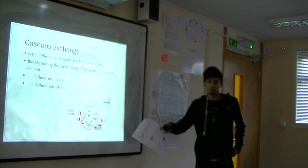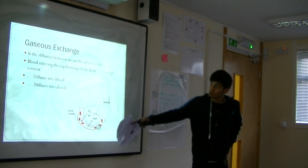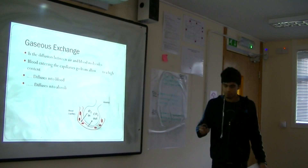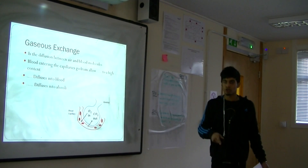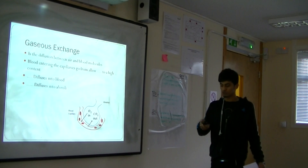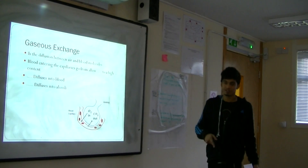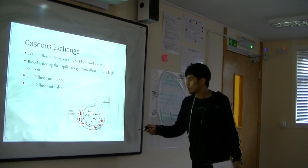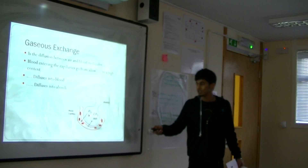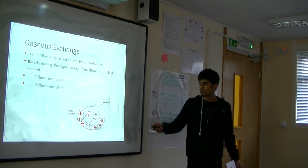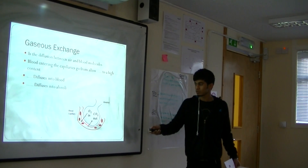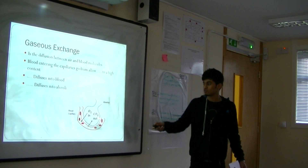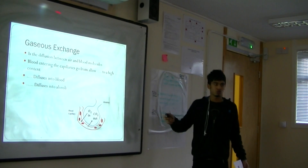Diffusion goes from a high concentration to a low concentration. Oxygen from the alveoli diffuses through the wall of the alveoli into the blood, and CO2 is diffused back from the blood into the lungs.